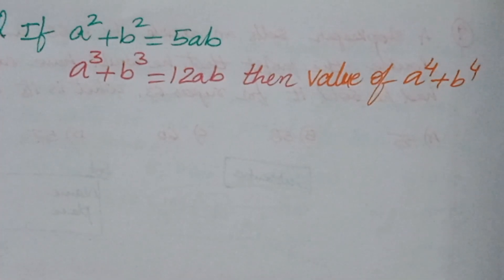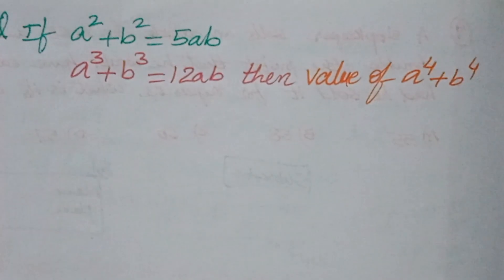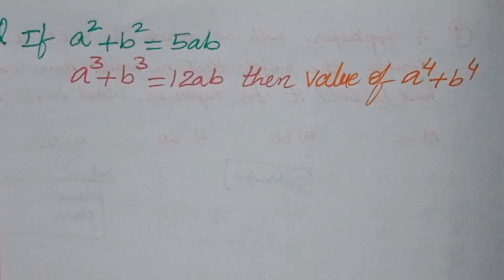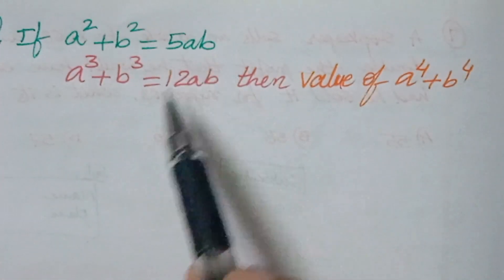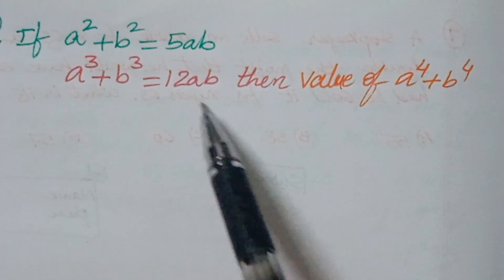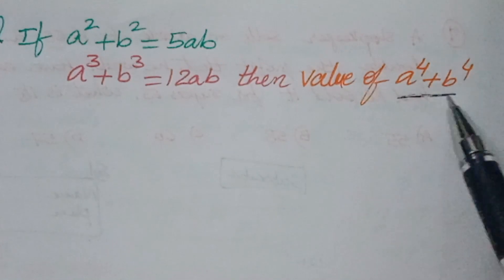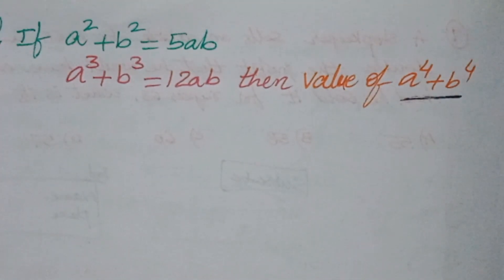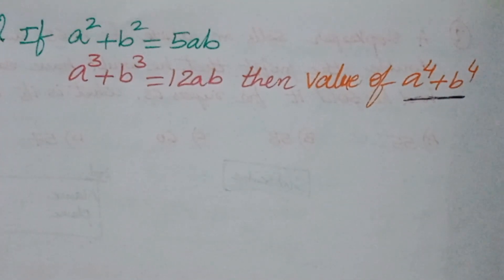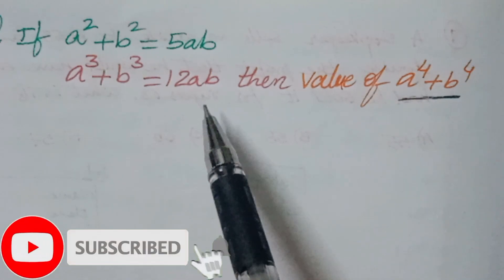Hello, welcome back to Ion CG Max. Today we will be looking at a logical problem. The question is: if a squared plus b squared equals 5ab, and a cubed plus b cubed equals 12ab, then find the value of a to the power of 4 plus b to the power of 4. Some logic is involved, that's why this question was selected. Before starting, pause the video and try it.